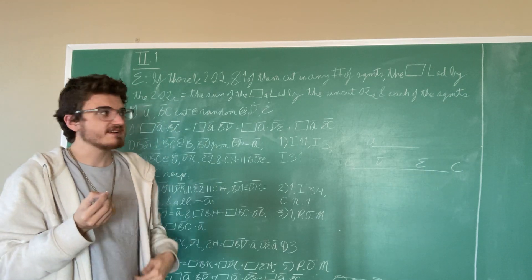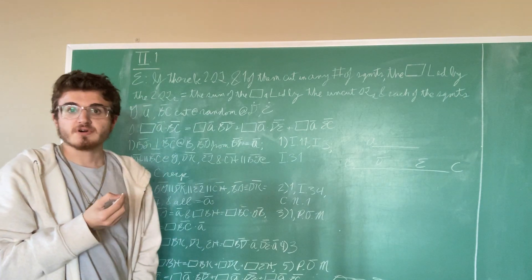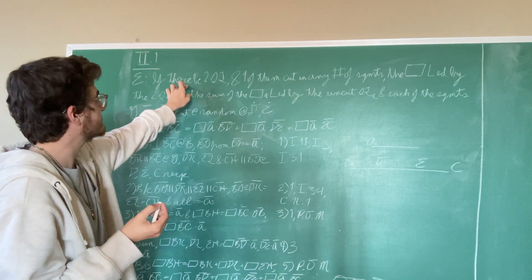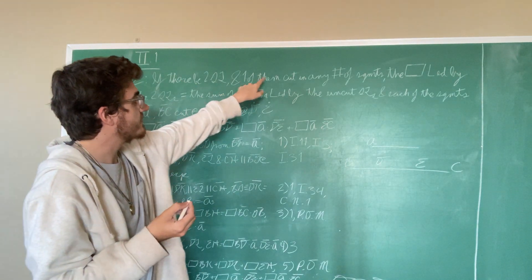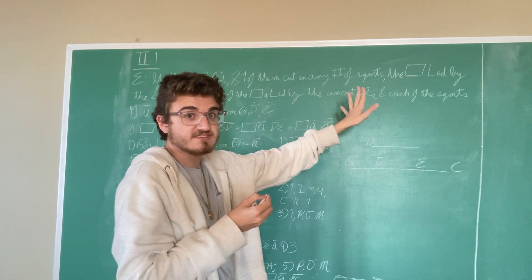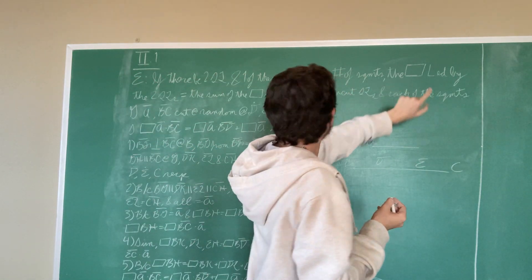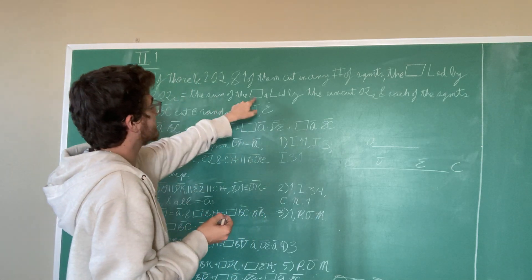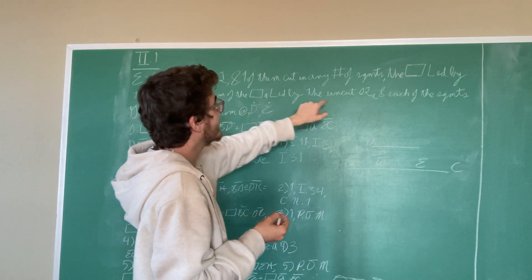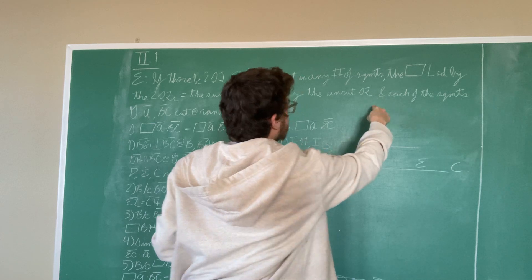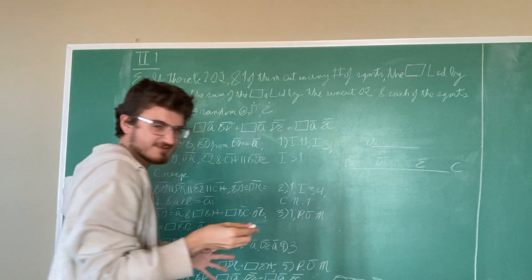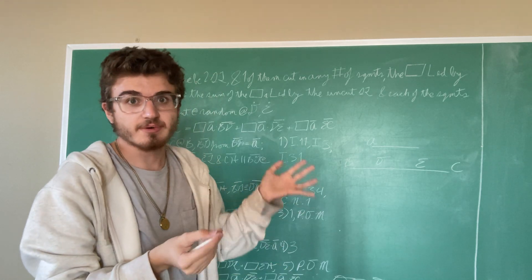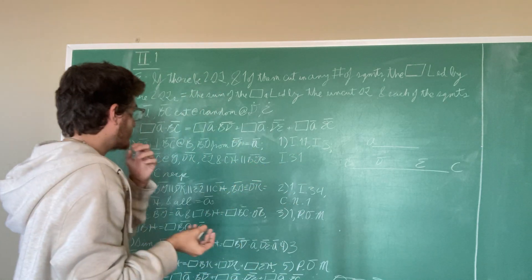Hello, this will be a demonstration of Book 2, Proposition 1, which states that if there be two straight lines and one of them is cut into any number of segments, the rectangle contained by the two straight lines will equal the sum of the rectangles contained by the uncut straight line and each of the segments. It's a weird enunciation — it's not exactly obvious what that means, but given an example, I think it makes it clear.